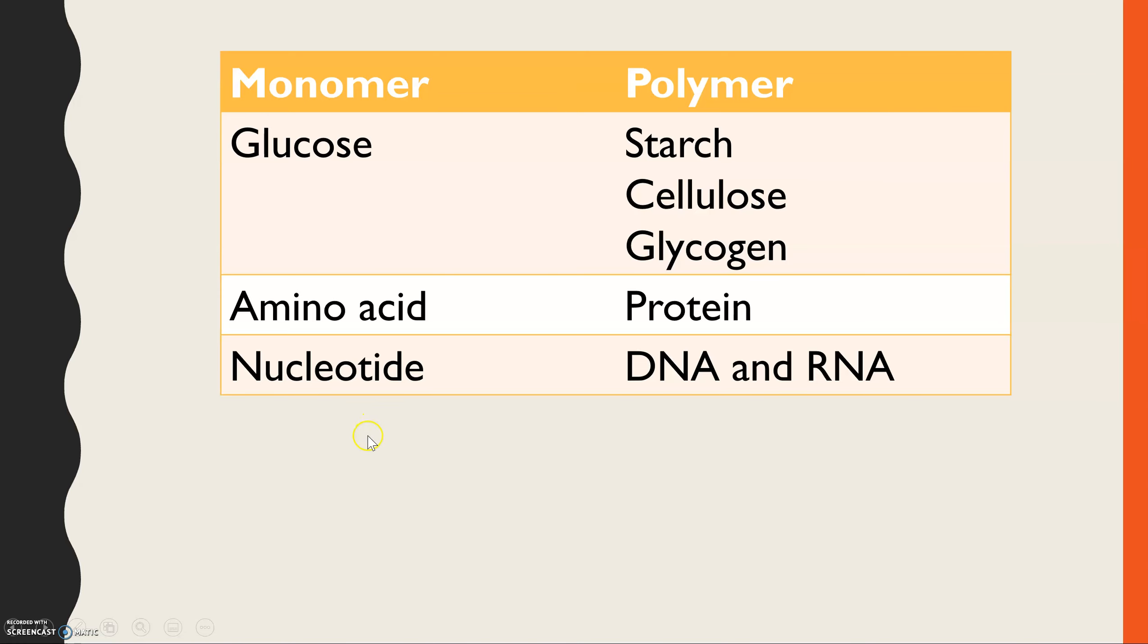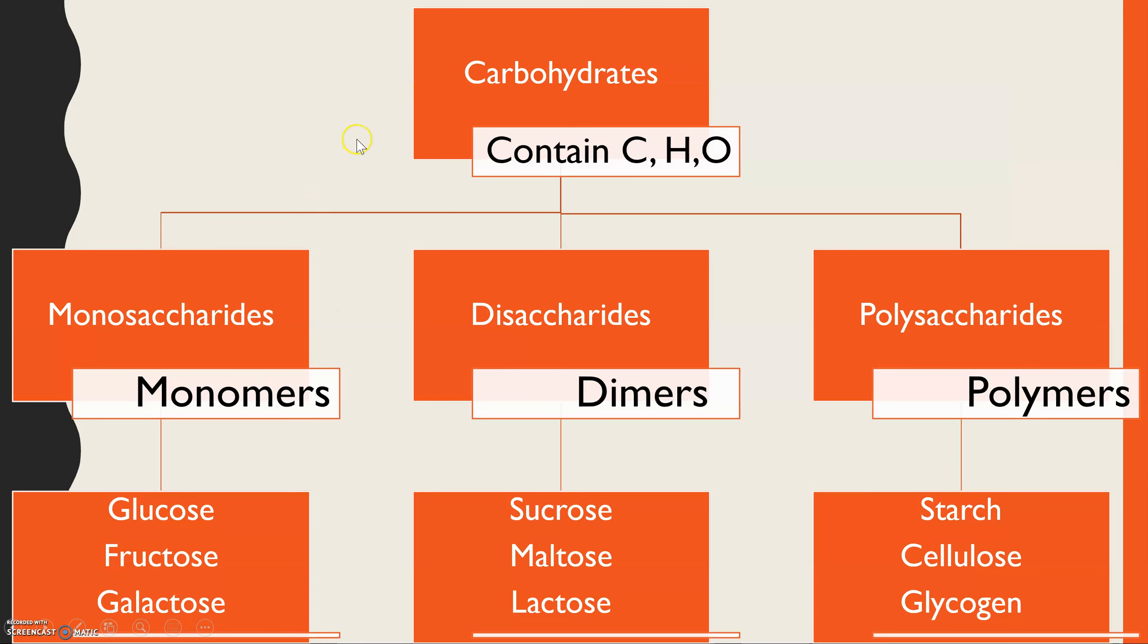So if we start off just by classifying the carbohydrates. One thing to point out to begin with, the three elements that they all contain are carbon, hydrogen, and oxygen. And we group the carbohydrates according to how many units they contain. So monomers is when you have one single unit, dimers is two units bonded together, polymers is many of those monosaccharides or monomers bonded together.